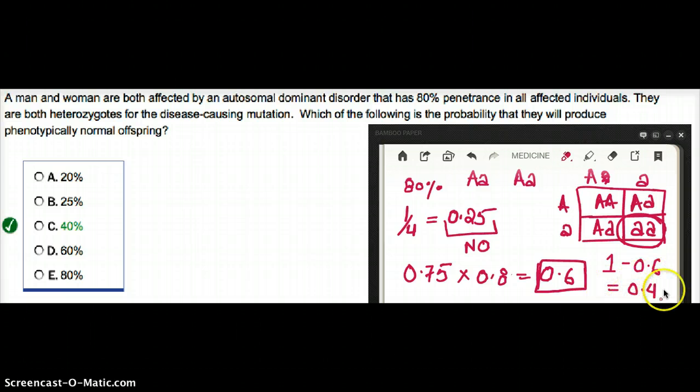That is the probability that the offspring is going to be normal. So, in this case, it's going to be 40%.